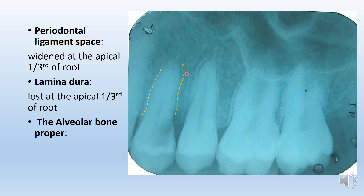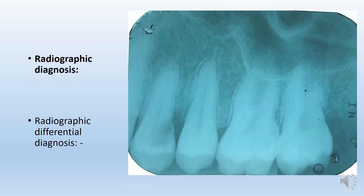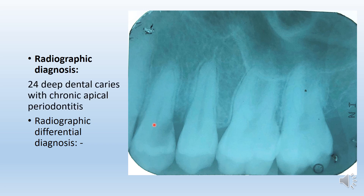Looking closer, these are the normal trabecular appearances at the maxillary premolar apex region, and hence the alveolar bone proper appears relatively normal. Since we have seen widening of the PDL space, loss of lamina dura at the apex, and a well-defined radiolucency consistent with dental caries involving the pulp — they all correlate. The radiographic diagnosis is: Tooth 2.4 — deep dental caries with chronic periapical periodontitis. Always start with the tooth number, followed by the finding and then the diagnosis.